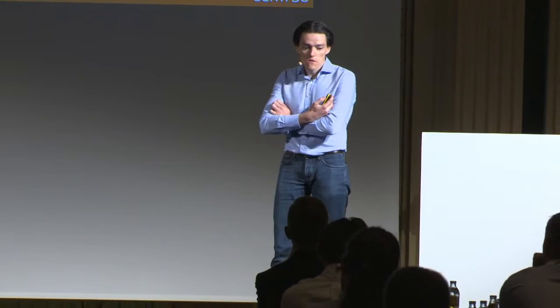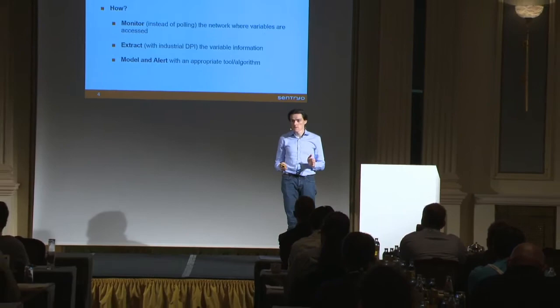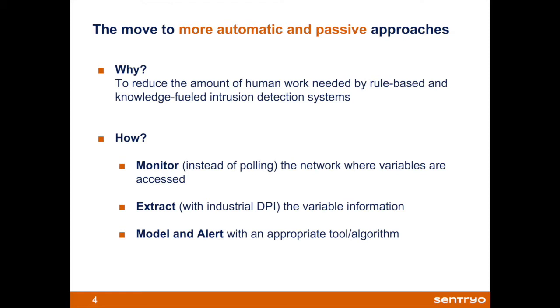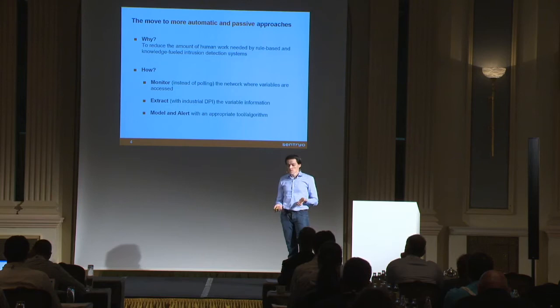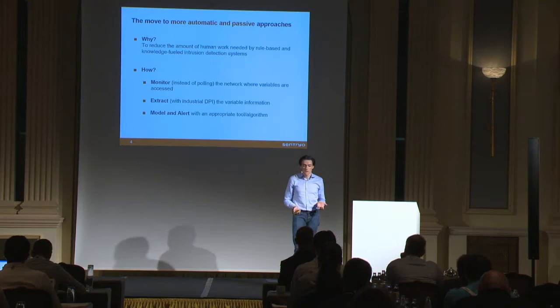These kinds of systems are often called expert systems, because all the knowledge inside the system comes from an expert who configures everything. These systems work, but one problem is they do not scale well because a lot of human interaction is needed. So there is a trend today for more passive and more autonomous approaches — passive because you can extract information directly from process variables, and autonomous because there are tools that can learn the normality of a process and alert when there is a deviation.